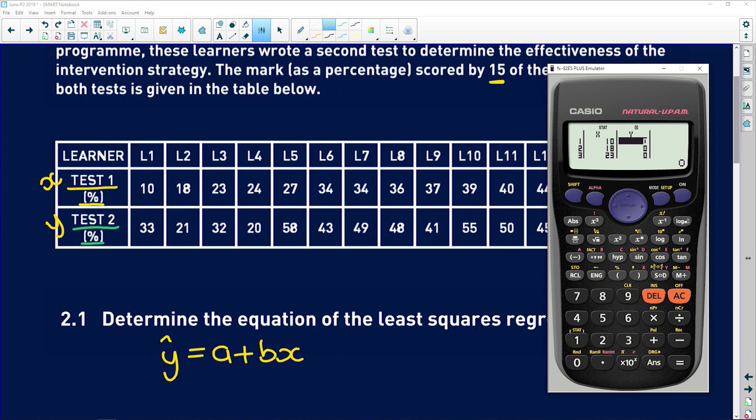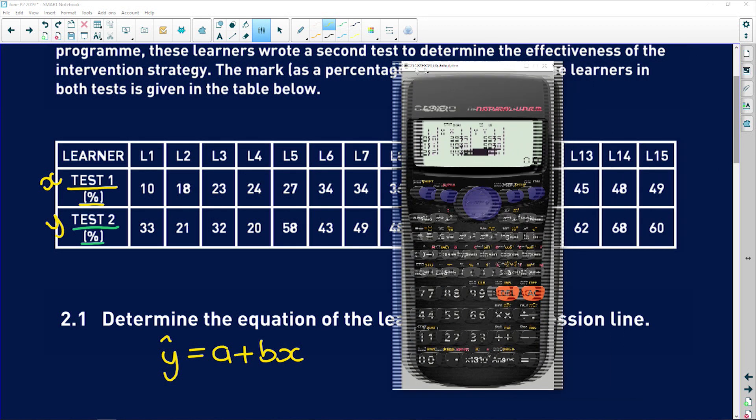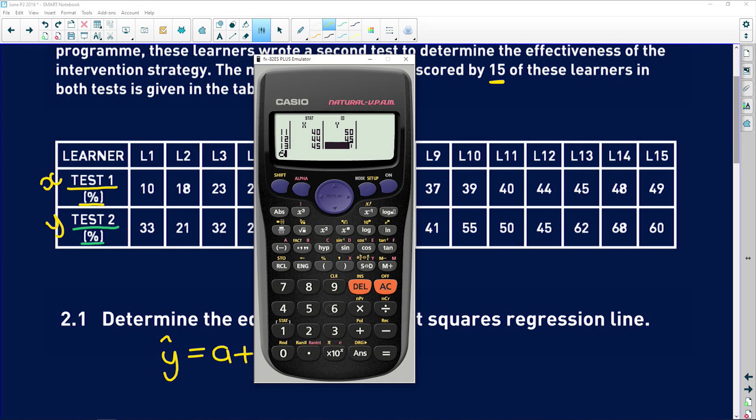So now if you look, the number of rows I've entered is 15. Make sure you have 15, because there are 15 learners. So now you go to top of the y column, and you enter in test two's marks. So 33, and you follow each mark with an equals. So guys, when you're doing this, it actually allows you to calculate so many different things for each of these variables. You can calculate the standard deviation, the mean, the correlation. It really is helpful. So make sure you know how to use the stats function on your calculator.